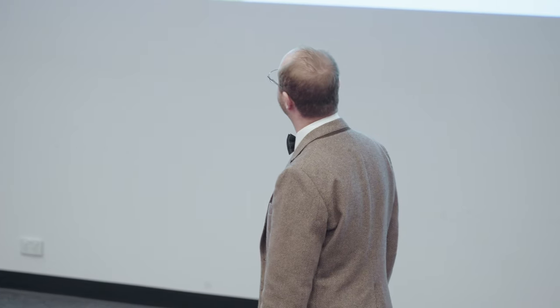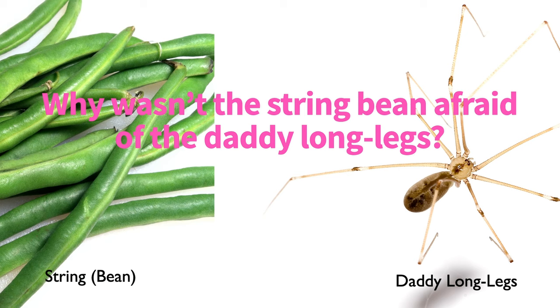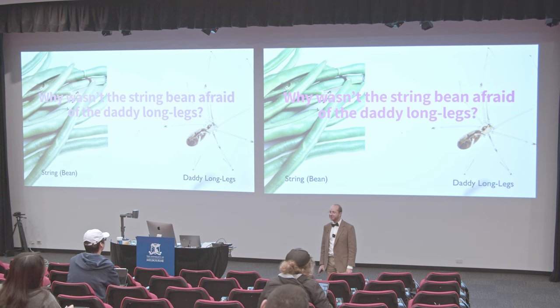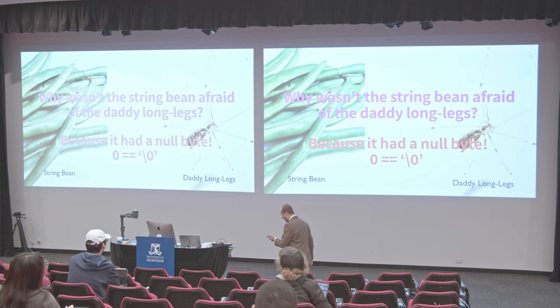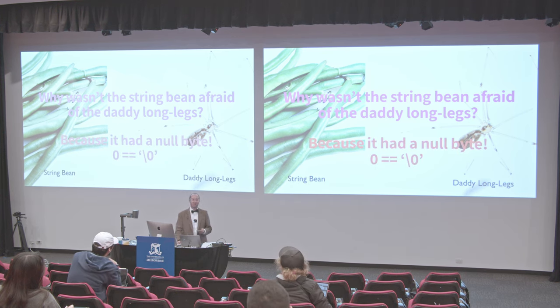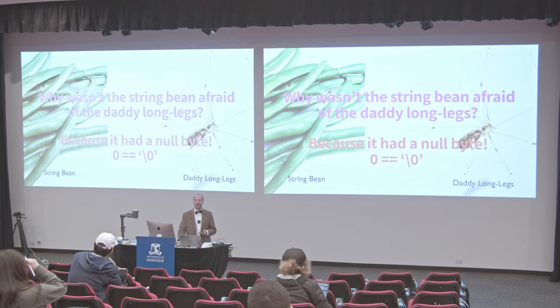Now I have a terrible dad joke to bring us back into the material. Why wasn't the string bean afraid of the daddy long legs? Because it had a null byte — the spider was not going to be able to do any damage. That is probably my one and only bad dad joke for the whole semester.